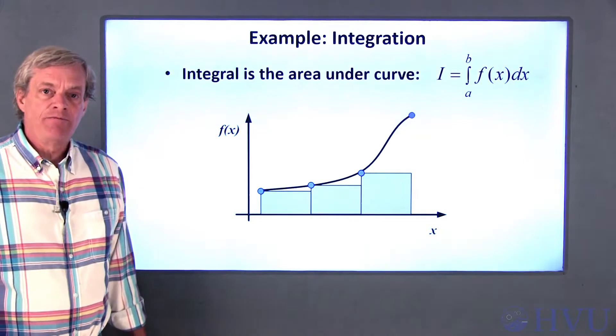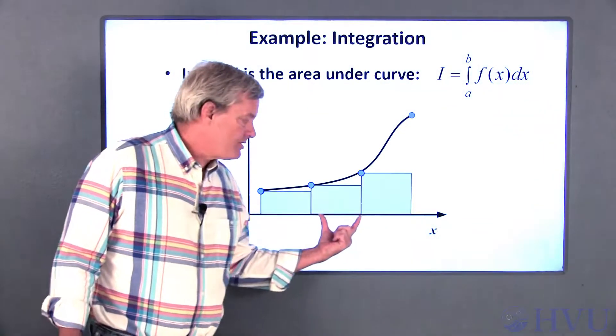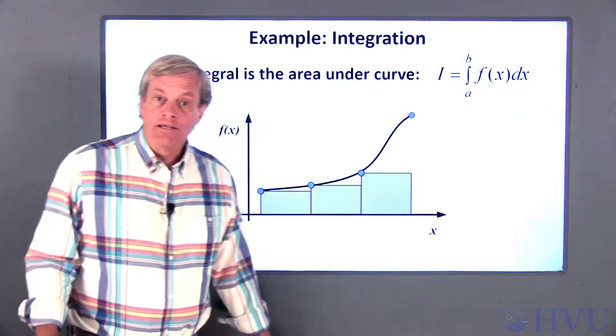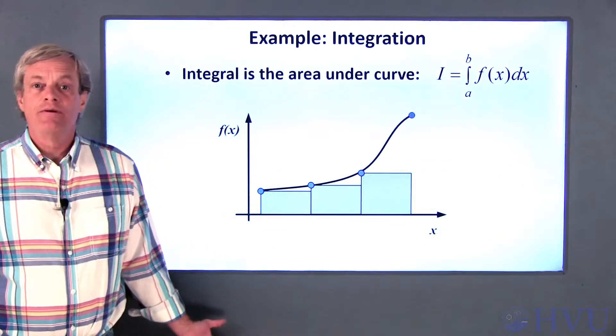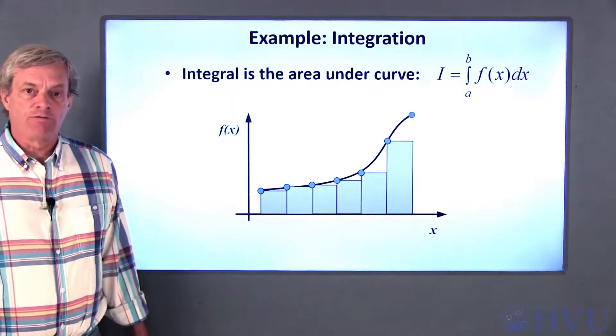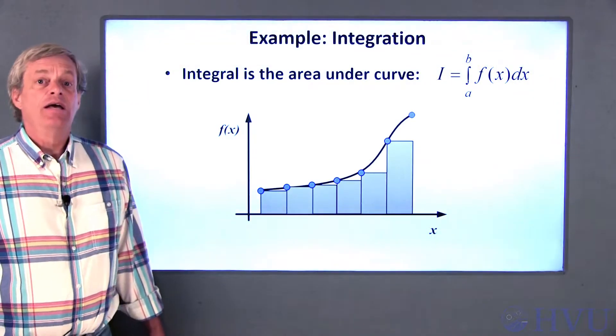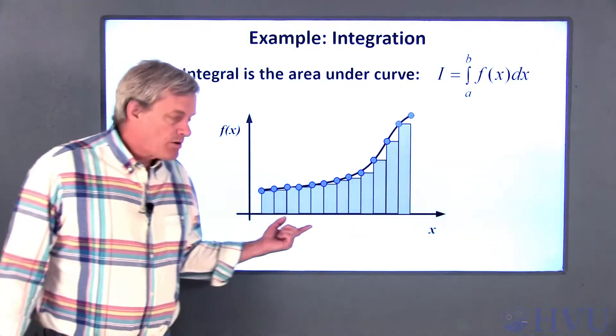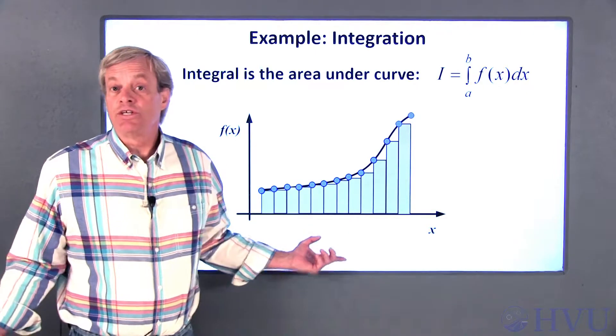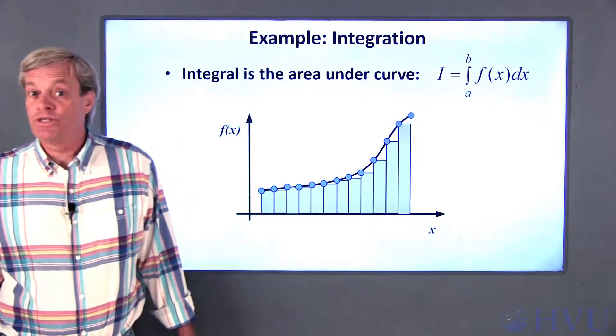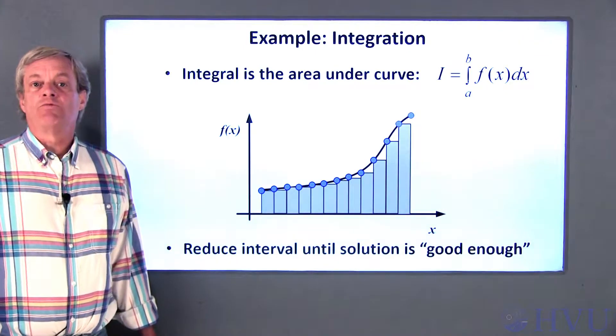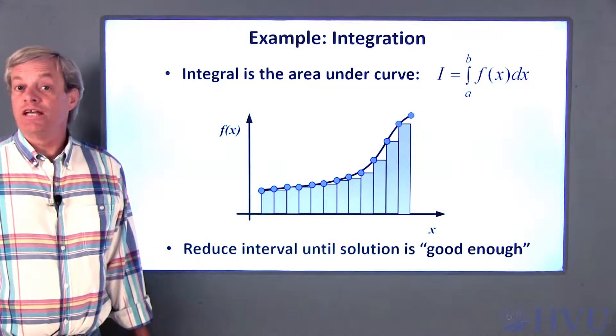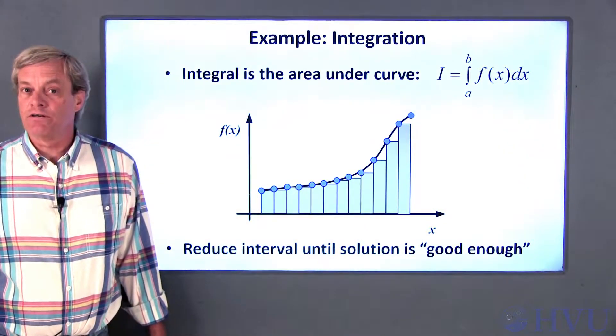We can solve this problem by subdividing the area into a number of intervals, defining rectangular areas as shown, and then adding up the areas of the rectangles. Then, we increase the number of intervals and recalculate the area. If you keep increasing the number of rectangles, the solution should keep getting closer and closer to the actual solution. Typically, we stop this process once the estimated area doesn't change significantly when we add more intervals.